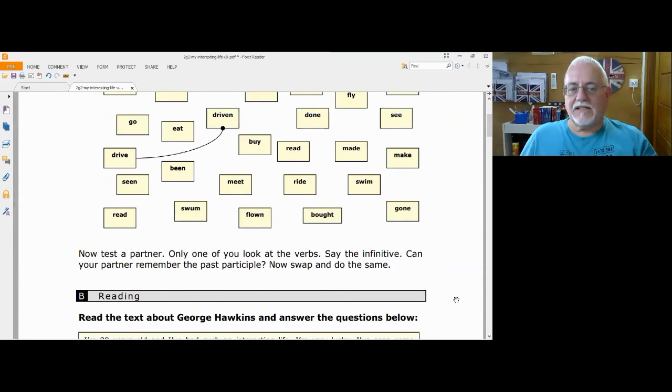Now, it's optional whether you do this next bit. You can get them to work in pairs and test a partner. Only one of you look at the verbs. So if you have them written on little scraps of paper, it would be perfect to split the base form of the verbs between one group and the past participles between another group. And they take it in turns asking. They could say, drive. And whoever has got the past participle of it can hold it up and say, driven.